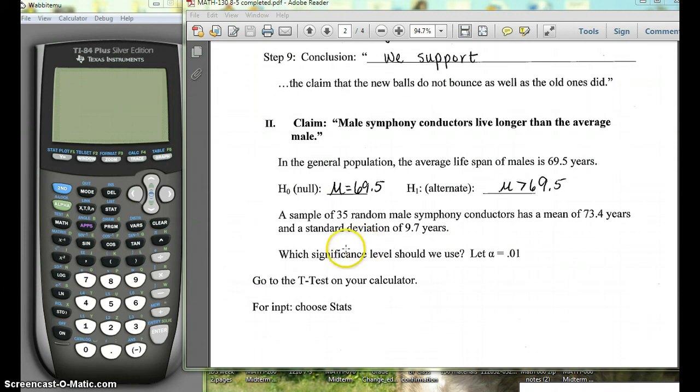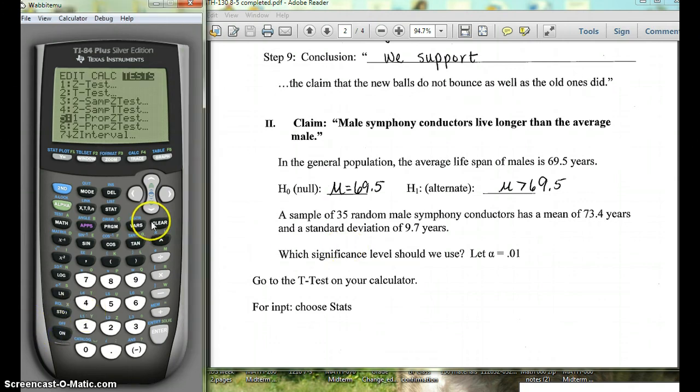Now we want to be able to find the p-value using our calculator, so we're going to turn our calculator on. And from the home screen you're going to hit STAT, go over to TESTS, and this is a T-test. So just number two, we're going to choose T-Test.